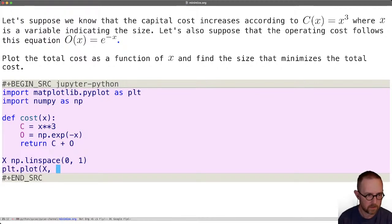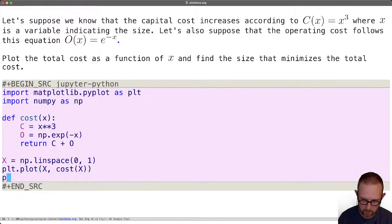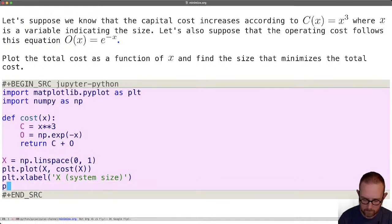x comma cost of x and you can see there's a typo here. And why don't we add some labels. And then this will just be the cost.